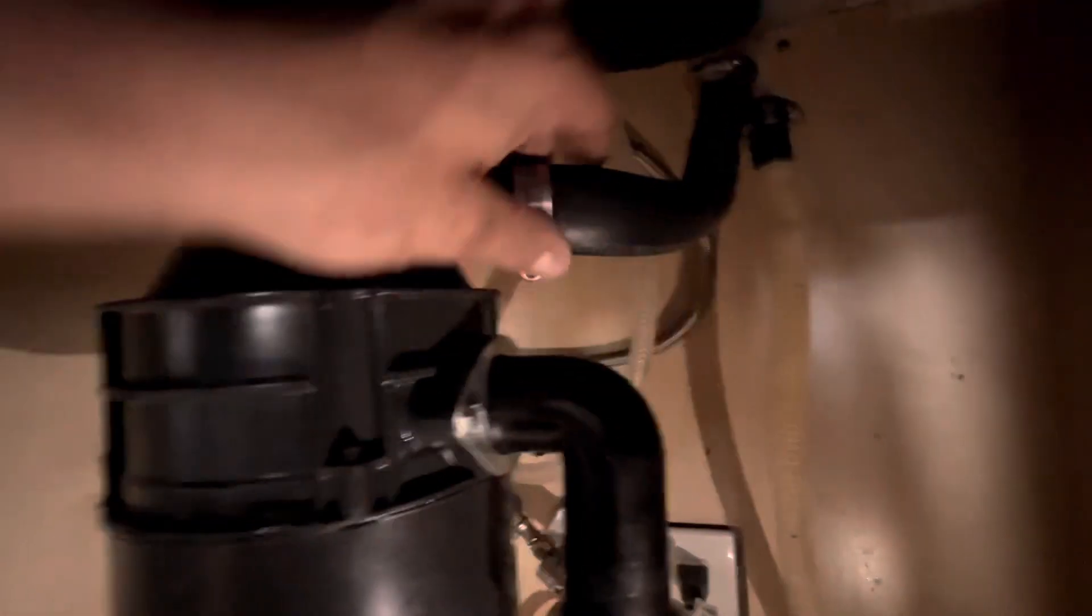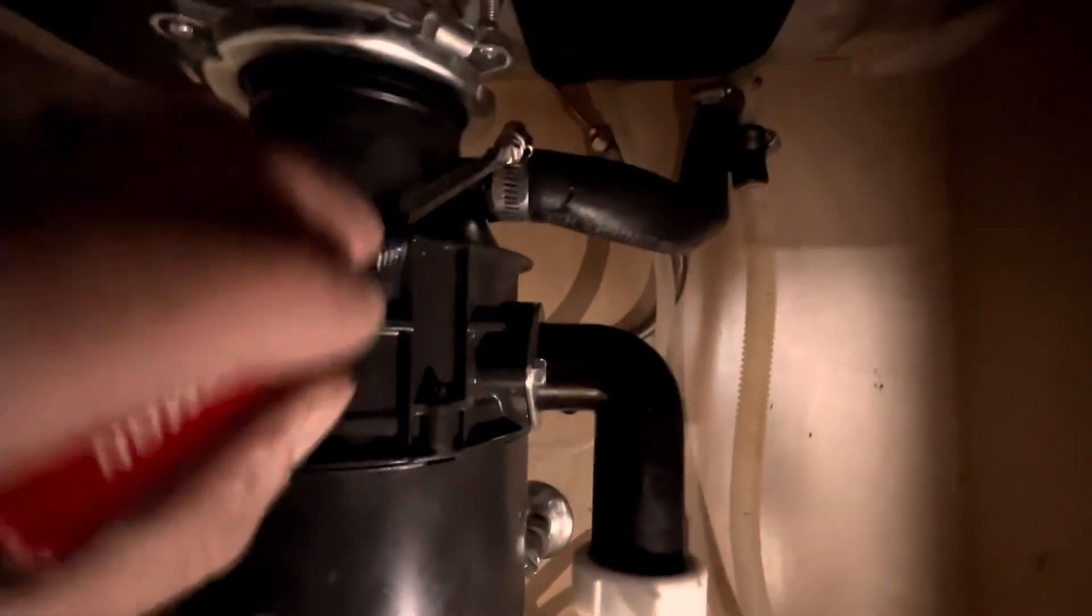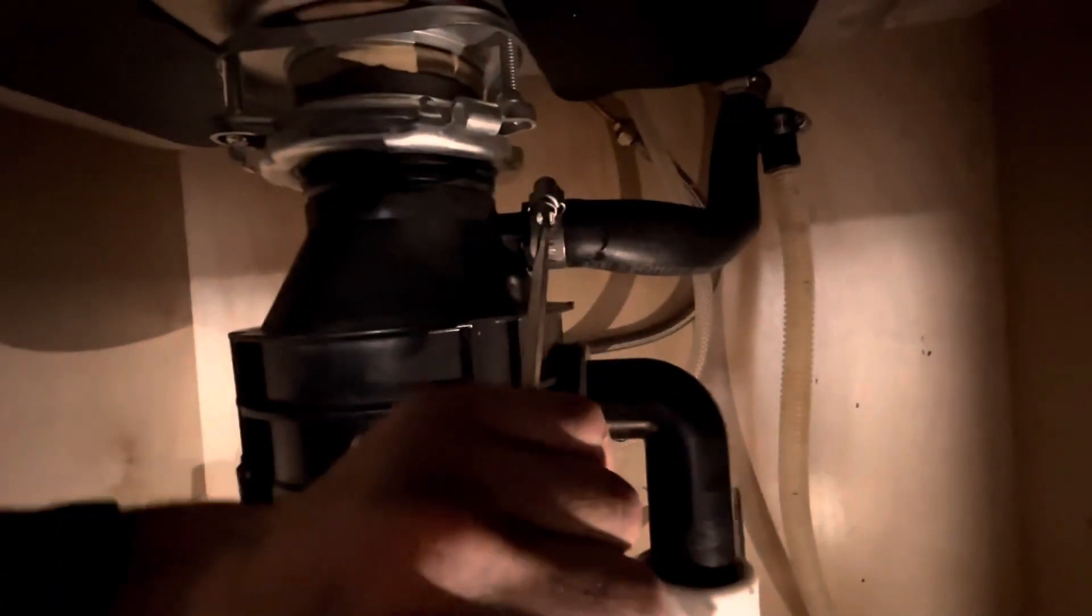With that on, now we can attach that hose that was clogged back to the garbage disposal. Just make sure it's nice and snug on all the way. Rotate the hose clamp in an orientation that benefits you for tightening it down, and make sure it's secure.